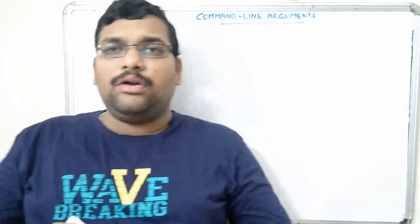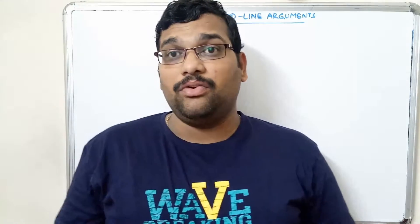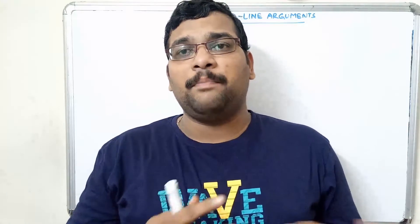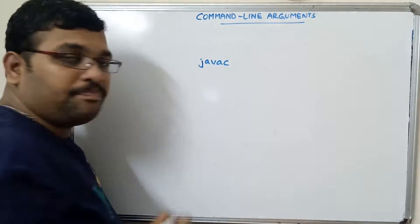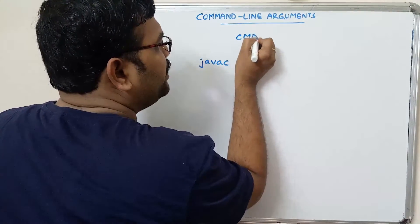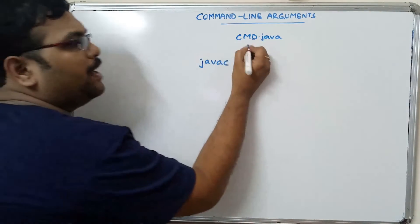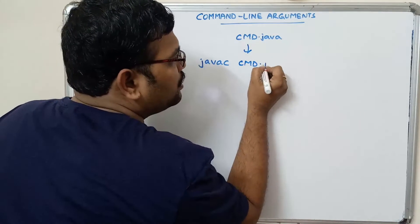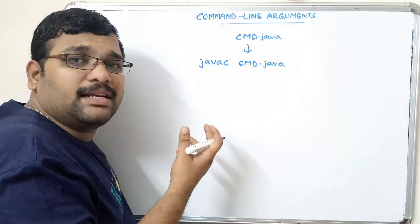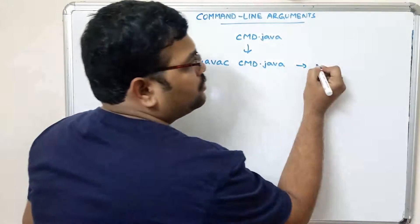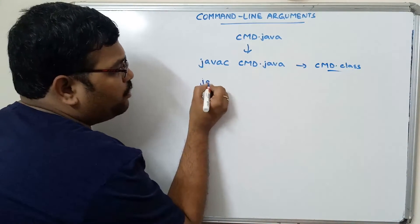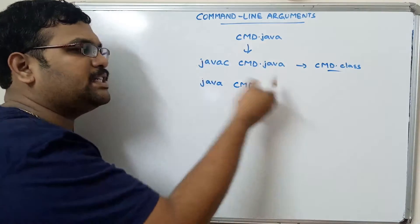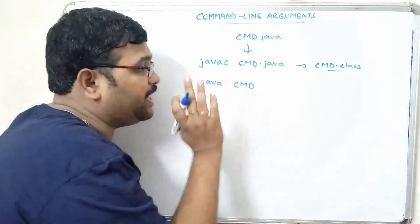With command line arguments, we need not write any input statements in the program itself. We can pass inputs as arguments while running the program. To compile a program we use the javac command — for example, javac cmd.java. It checks for errors and generates a cmd.class file. To execute, we use the java command followed by the class name, such as java cmd, without specifying any extension — by default it takes the .class file.